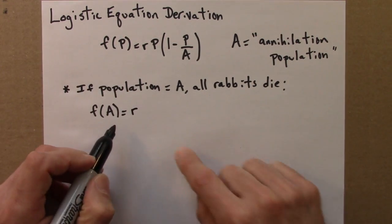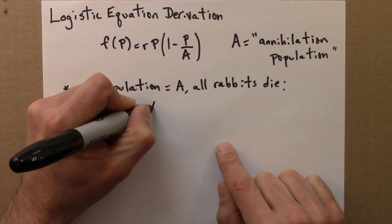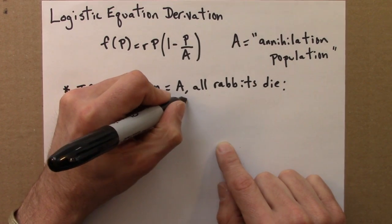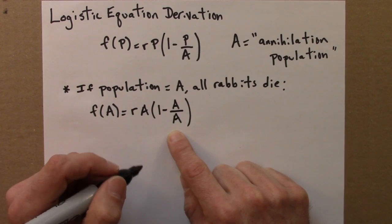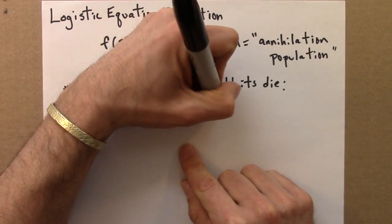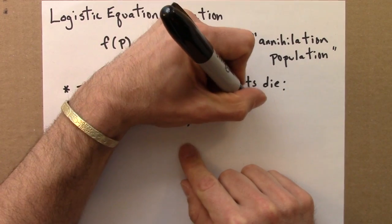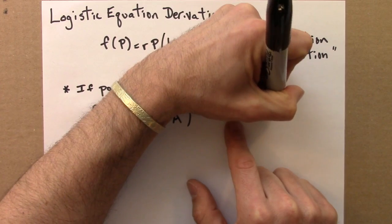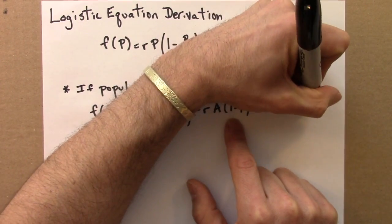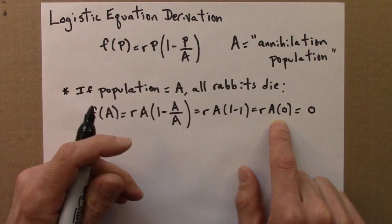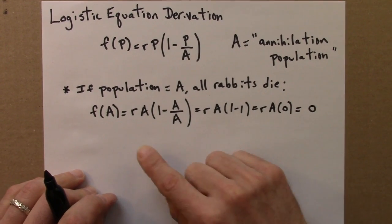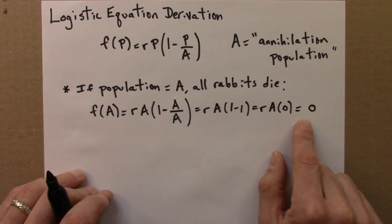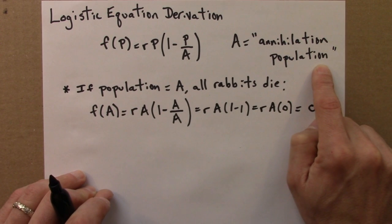So let's plug in and see what happens. So I have r, I'm plugging in a for p, a over a is 1, 1 minus 1 is 0, and ra times 0. So indeed if the population reaches a, there will be no rabbits the next year. So a is the annihilation population or the apocalypse population.